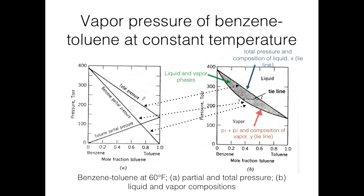Here we see the total pressure line, which is the summation of the benzene partial pressure and the toluene partial pressure. As the benzene partial pressure decreases, the toluene partial pressure increases as the mole fraction of toluene increases, and when you add these two together you arrive at the total pressure. Benzene partial pressure continues to decrease as toluene mole fraction increases, while toluene partial pressure increases with increasing toluene mole fraction.